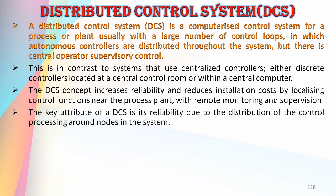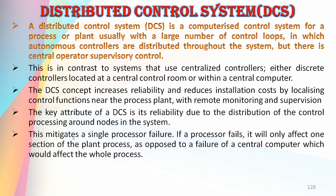The key attribute of a DCS is its reliability, due to the distribution of the control processing around nodes in the system, and this mitigates a single processor failure. If a processor fails, it will only affect one section of the plant process, as opposed to a failure of a central computer which would affect the whole process.